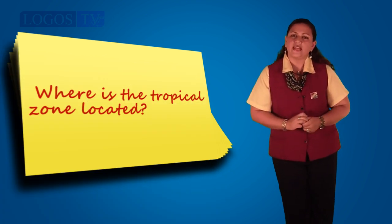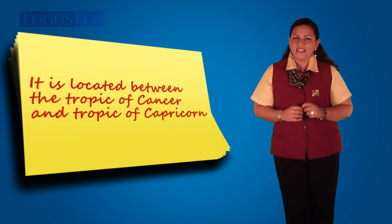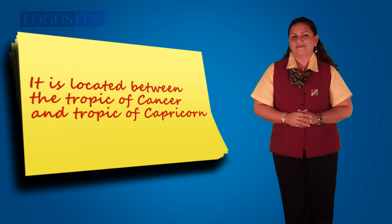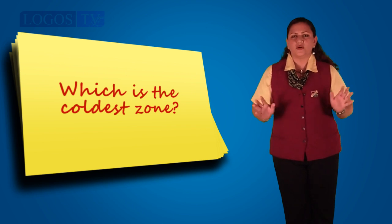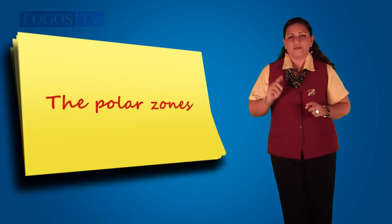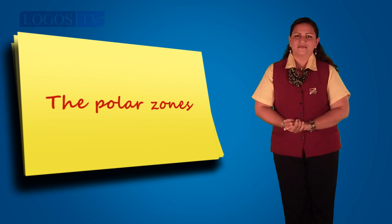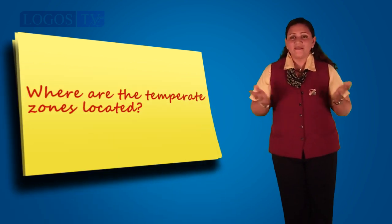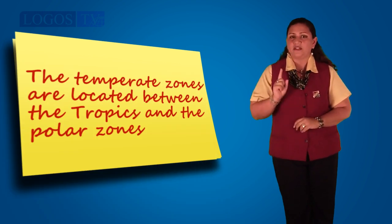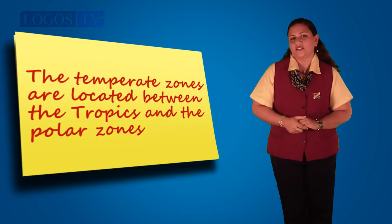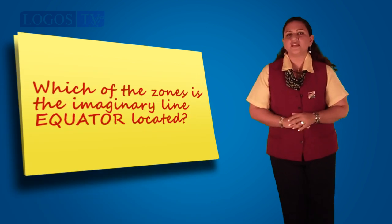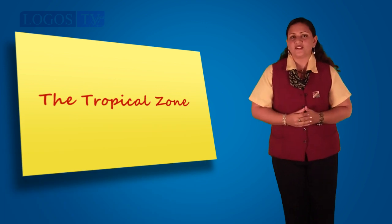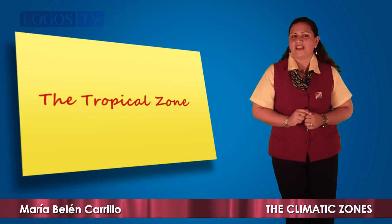Where is the tropical zone located? It is located between the Tropic of Cancer and the Tropic of Capricorn. Which is the coldest zone? The polar zones, of course! Where are the temperate zones located? The temperate zones are located between the tropics and the polar zone. In which zone is the imaginary line — the equator — located? In the tropical zone, of course. That is why it is hot there.